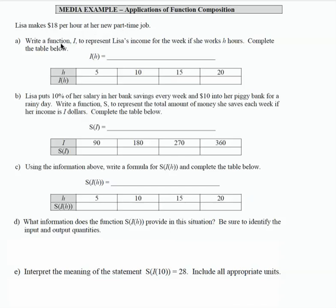Write a function in Part A, and this function is called I, that represents Lisa's income for the week if she works H hours. So if we want to write a function, for every hour she works, her income is $18, so that would be pretty straightforward, just 18H.